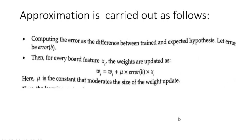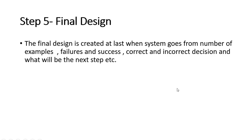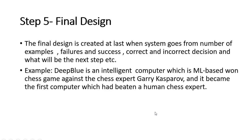The last step is the final design, where the system goes through a number of examples. Once your design is ready, you check how many failures and successes are achieved, how many correct and incorrect decisions have been taken, and based on that you correct your algorithm. A good example is Deep Blue — an intelligent ML-based computer that won the chess game against chess expert Garry Kasparov, becoming the first computer to beat a human chess expert.